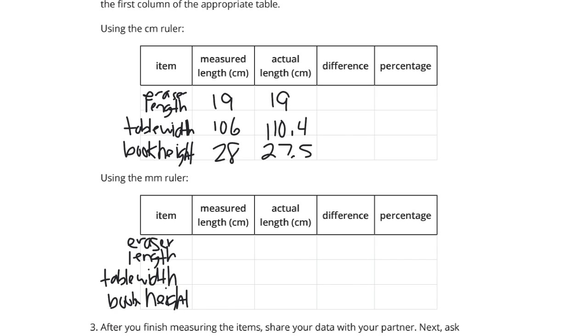And then, using the millimeter ruler, the actual length here, 19 again, 110.4, and 27.5. The eraser length we measured using the millimeter ruler was 19.1, 106, and this time 27.7. So, we're able to be more precise with the millimeter ruler.